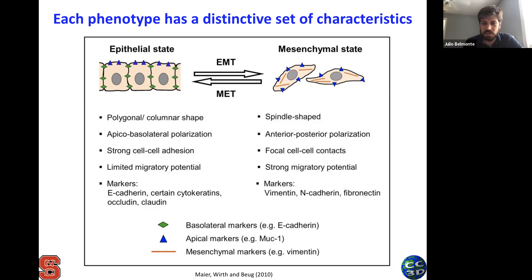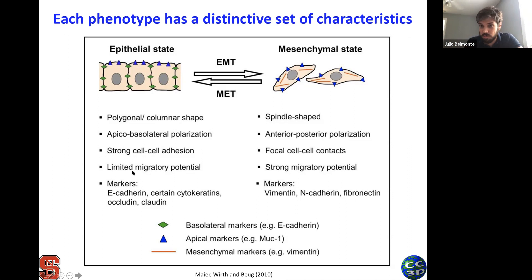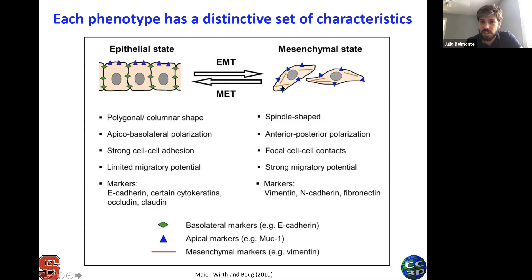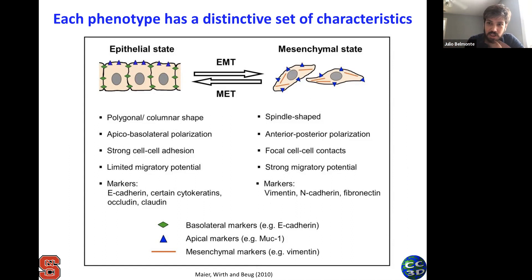Here is a table of the characteristics of the epithelial state and mesenchymal state. Epithelial cells have a regular shape, apical-basal polarization — a top and a bottom — with a basal side touching the ECM and an apical side touching outer space. They have strong cell-cell adhesions and cannot move much, and they have a set of typical markers. Mesenchymal cells are spindle-shaped, may have anterior-posterior polarization — a front and a tail — enabling them to move. They have strong migratory potentials, focal contacts, and a set of markers to identify which state they're in.